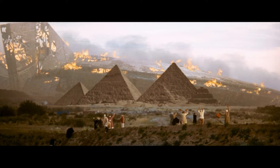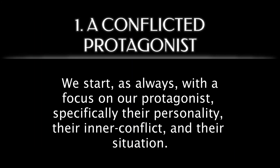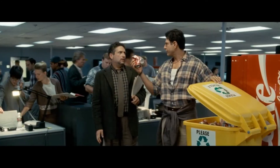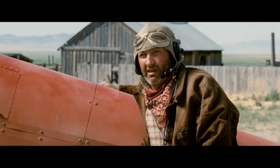Let's begin. We start, as always, with a focus on our protagonist — specifically their personality, their inner conflict, or their situation. The alien mothership arrives at Earth. President Whitmore balances family duties, while David the Environmentalist saves the world, and Russell stumbles day to day, drunk and damaged.